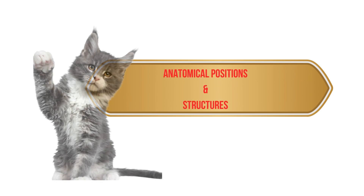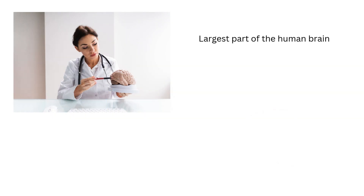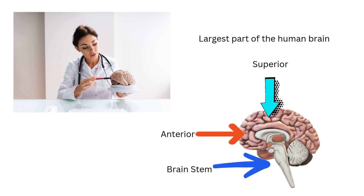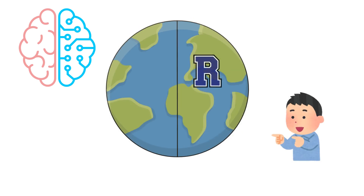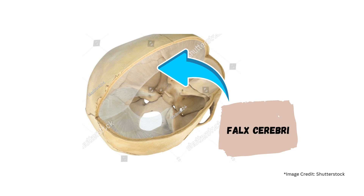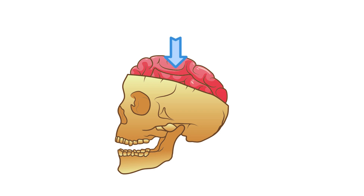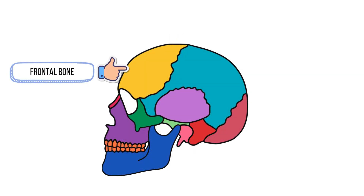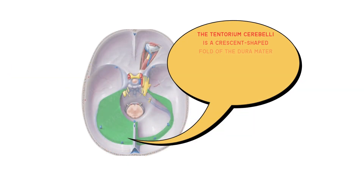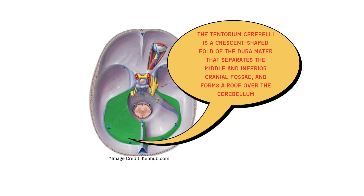Let us start by discussing the anatomical positions and structures of the cerebrum. The cerebrum is the largest part of the human brain, located anterior and superior to the brain stem. It is divided into two hemispheres, the right and the left. The falx cerebri is a sickle-shaped structure in the dura mater that divides the brain into its left and right cerebral hemispheres. The cerebrum is located inside the bony cranium, and it extends from the frontal bone anteriorly to the occipital bone posteriorly. The tentorium cerebelli is a crescent-shaped fold of the dura mater that separates the middle and inferior cranial fossae, forming a protective roof over the cerebellum.